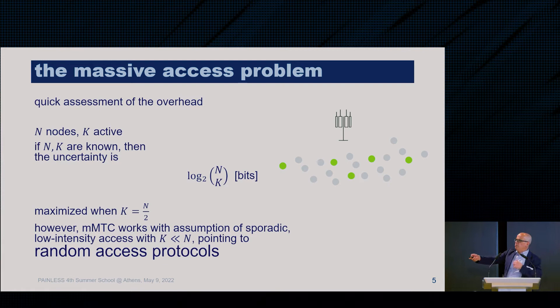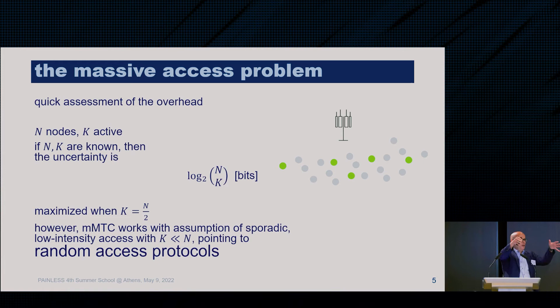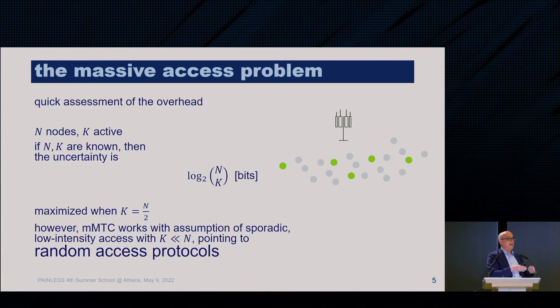To describe the subset of active users you need log₂(n choose k) bits, because if k users are active out of n, there are n-choose-k possible subsets. However, nobody knows these bits because they are all distributed — only a supernatural observer could say which nodes are active. This is an indicator of how much overhead we need: our uncertainty is log₂(n choose k) bits, so we need an information exchange process that yields at least this many bits.